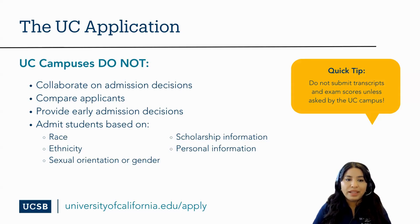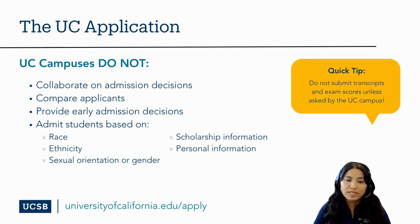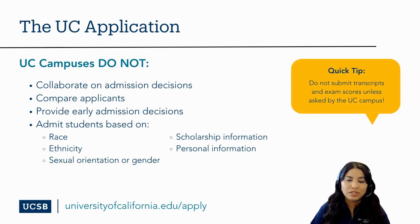The University of California asks for race, ethnicity, sexual orientation, gender, religion, and other personal questions within the application. However, these are not used in the selection process and instead are formatted for statistical purposes after admissions decisions are completed.